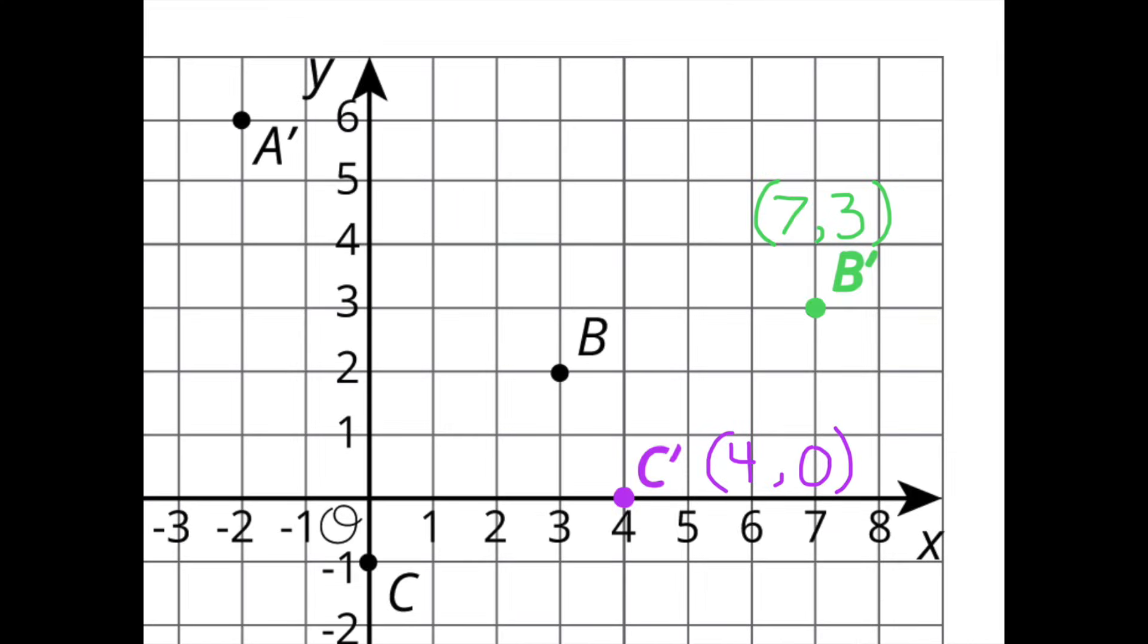Here are points B' and C'. The coordinates for B' are 7 and 3, and the coordinates for C' are 4 and 0.